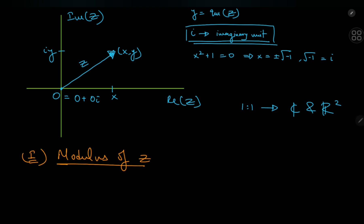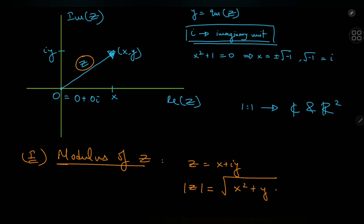Starting with the modulus: the modulus of any complex number z = x + iy is the length of this vector, so |z| is defined as the square root of x² + y².